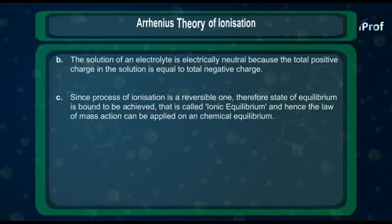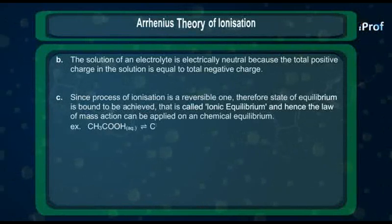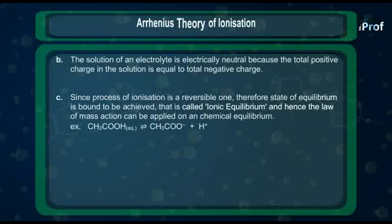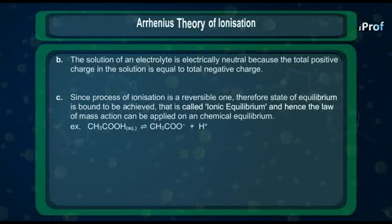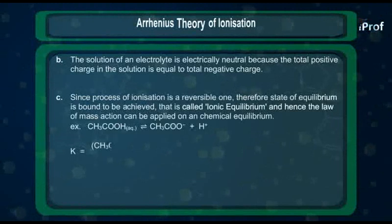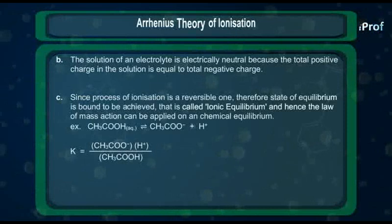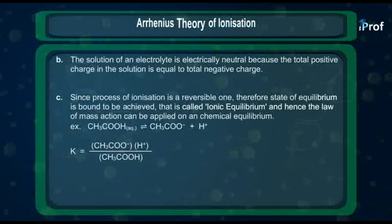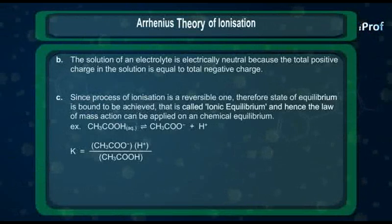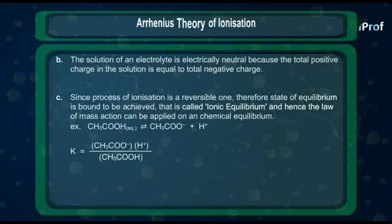Consider the dissociation of acetic acid in water. CH₃COOH reversibly dissociates into CH₃COO⁻ and H⁺. Therefore, according to the law of mass action, equilibrium constant K equals [CH₃COO⁻][H⁺] / [CH₃COOH]. This equilibrium constant with respect to acid is called the dissociation constant of the acid, written as Ka. Similarly, for a base, the equilibrium constant is written as Kb.